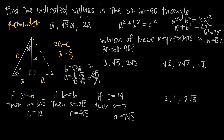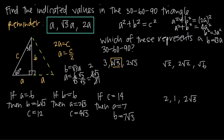That's how we apply this special relationship between the side lengths of a 30-60-90 triangle. Now, what if we look at it from a different angle? We've been asked which of these sets of side lengths represents a 30-60-90 triangle. For the first set — 3, √3, and 2√3 — the easiest approach is to find the smallest value. We can see √3 is smaller than 2√3 and also smaller than 3, so √3 is the shortest leg.